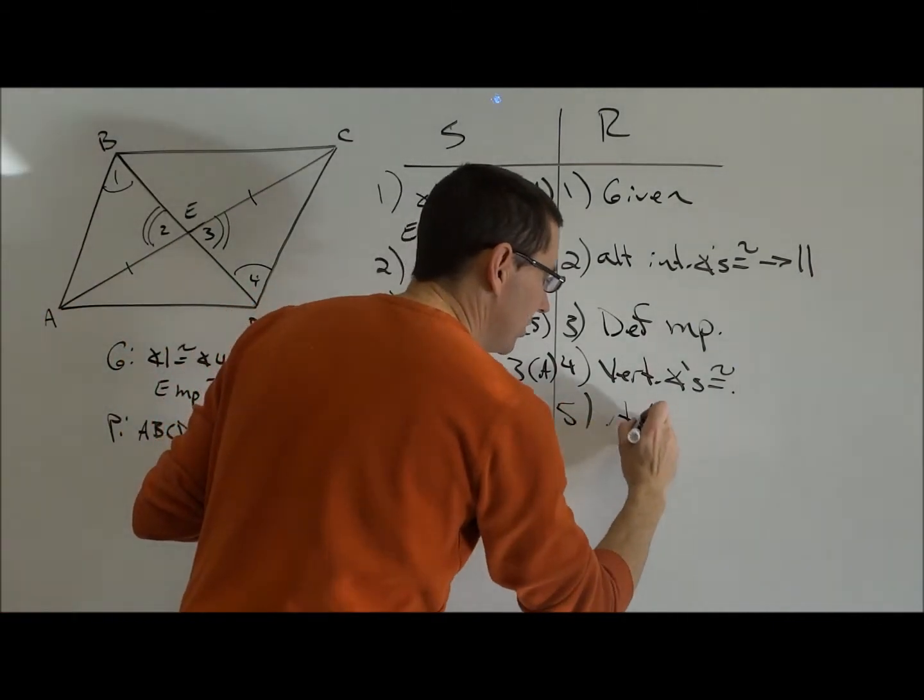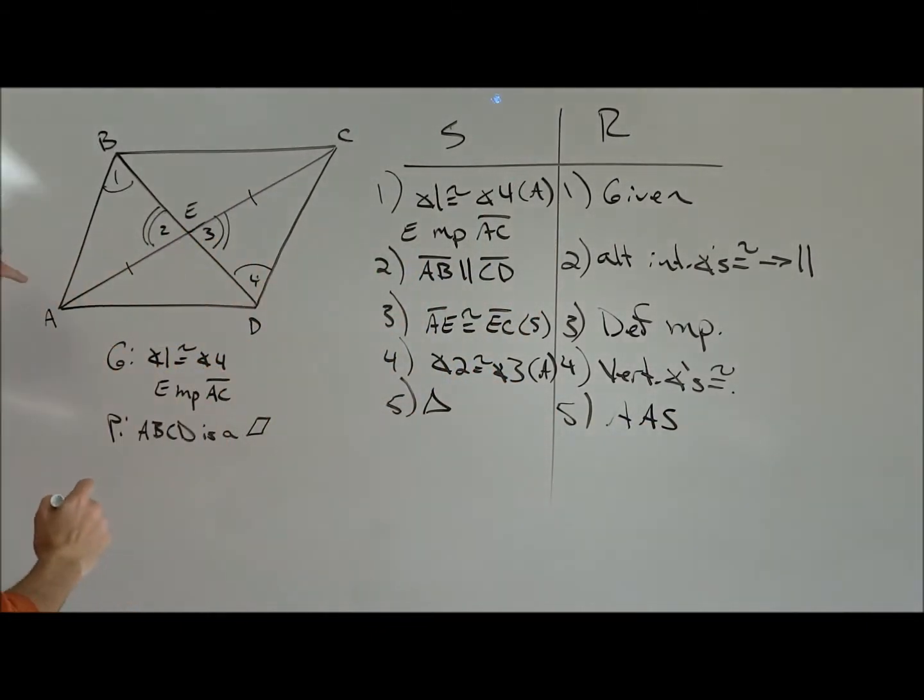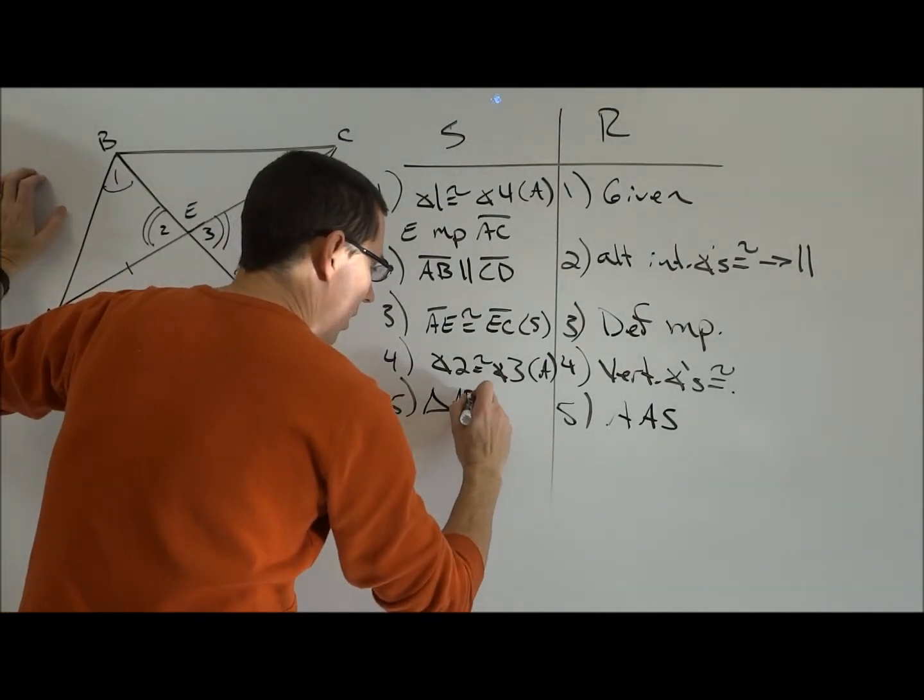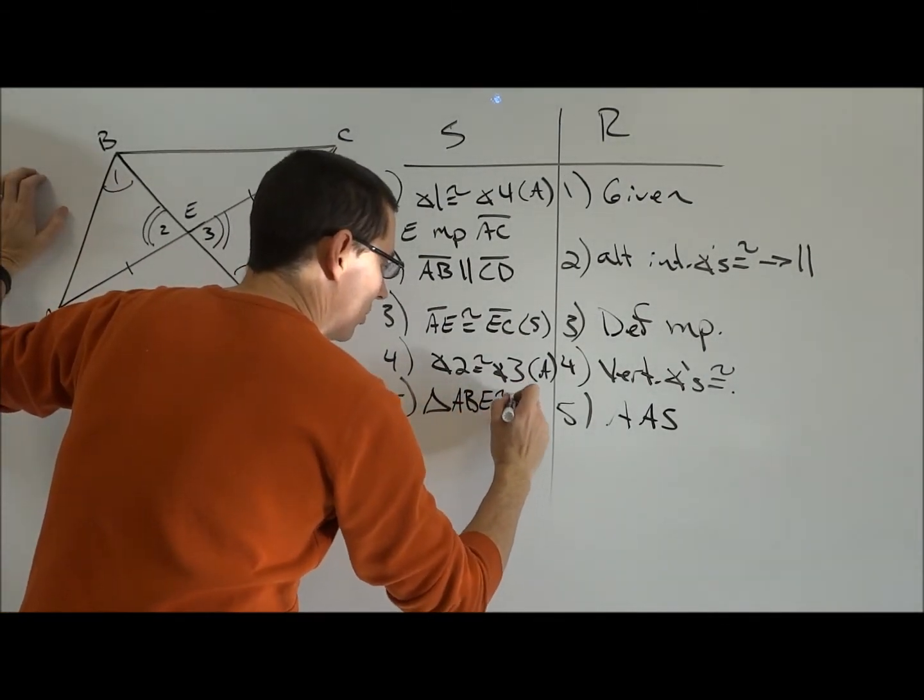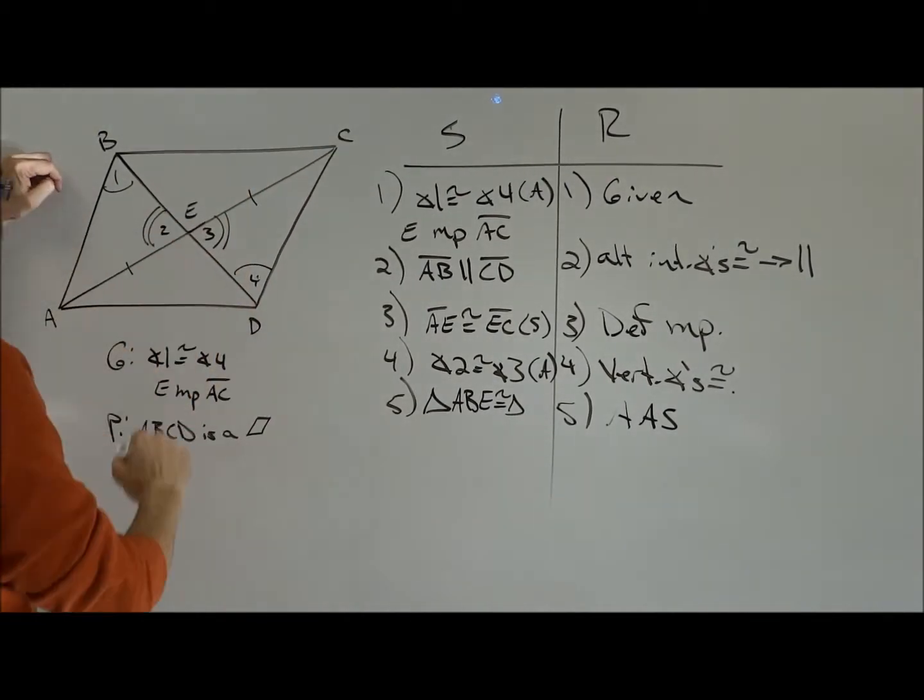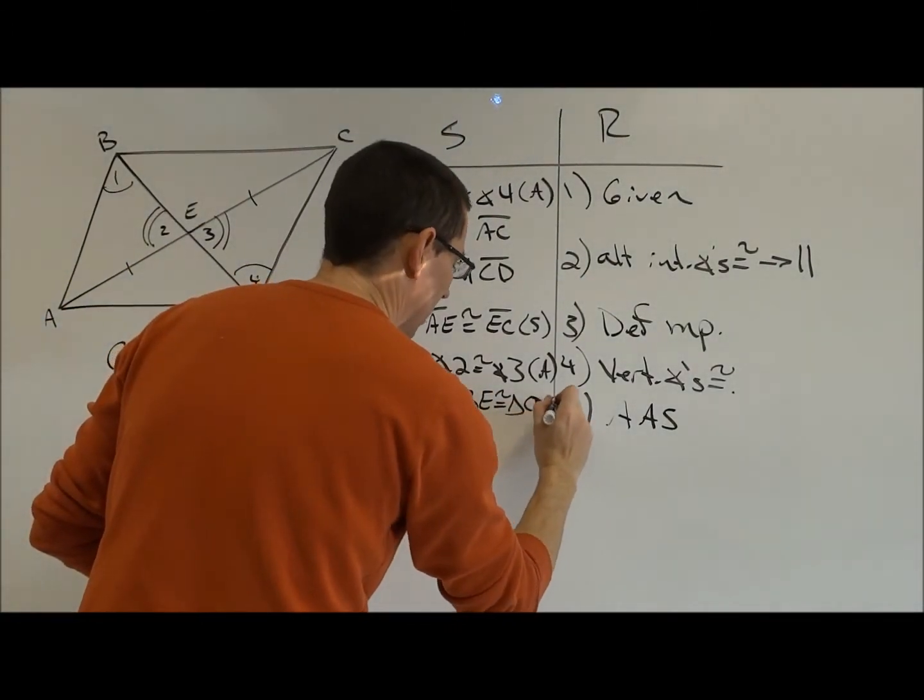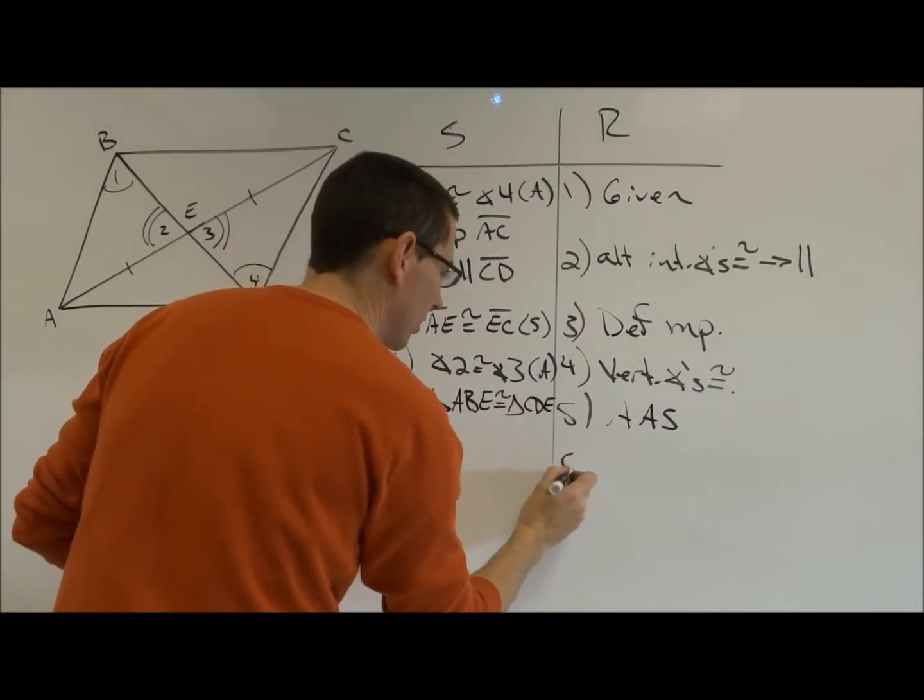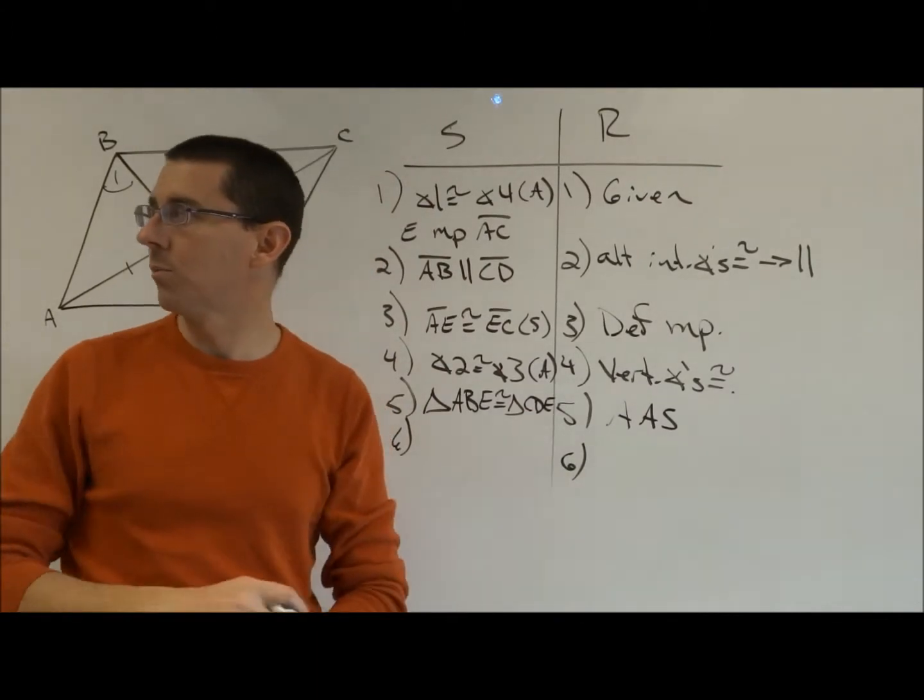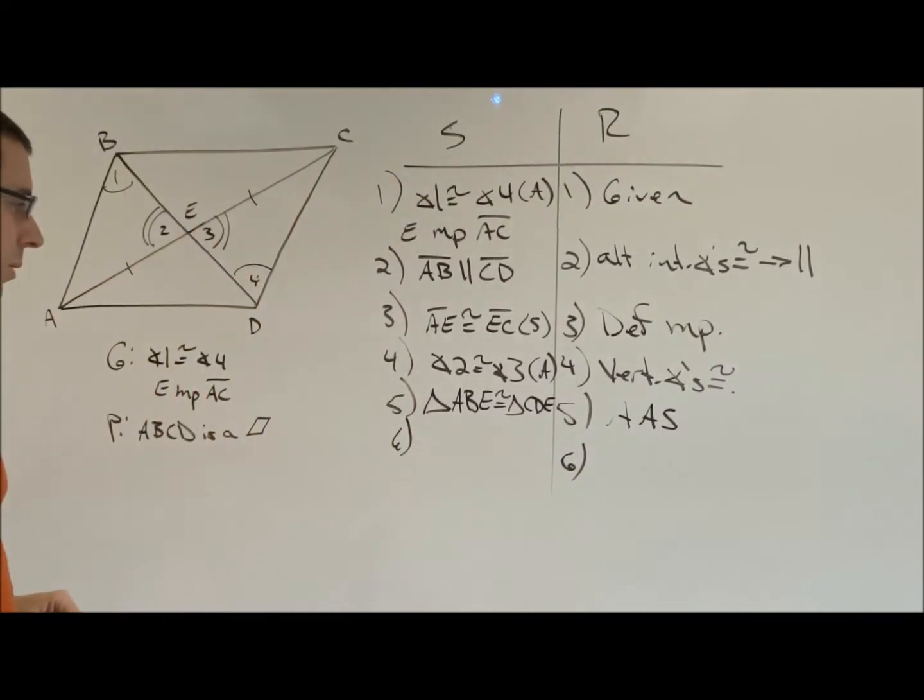So the reason is going to be angle, angle, side. I've got to make sure I get the triangle congruent statement correct. If I said triangle A, B, E, that's going to be congruent to triangle, A is going to correspond with C, B with D, E with itself. So it's going to be triangle C, D, E. You can hear that noise that is the thundering herd warming up in the hallway as they run by my door. Go warm up herd.